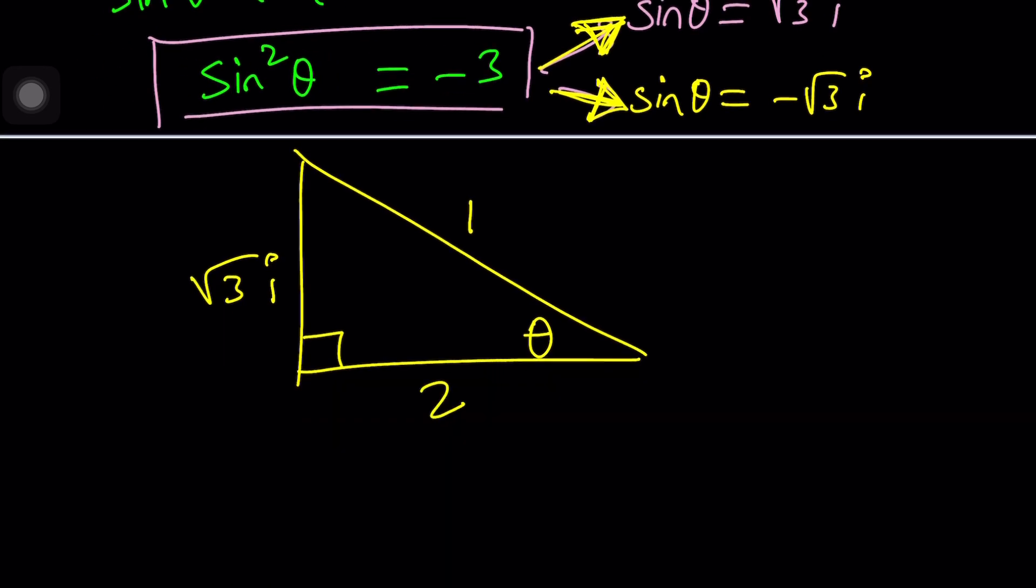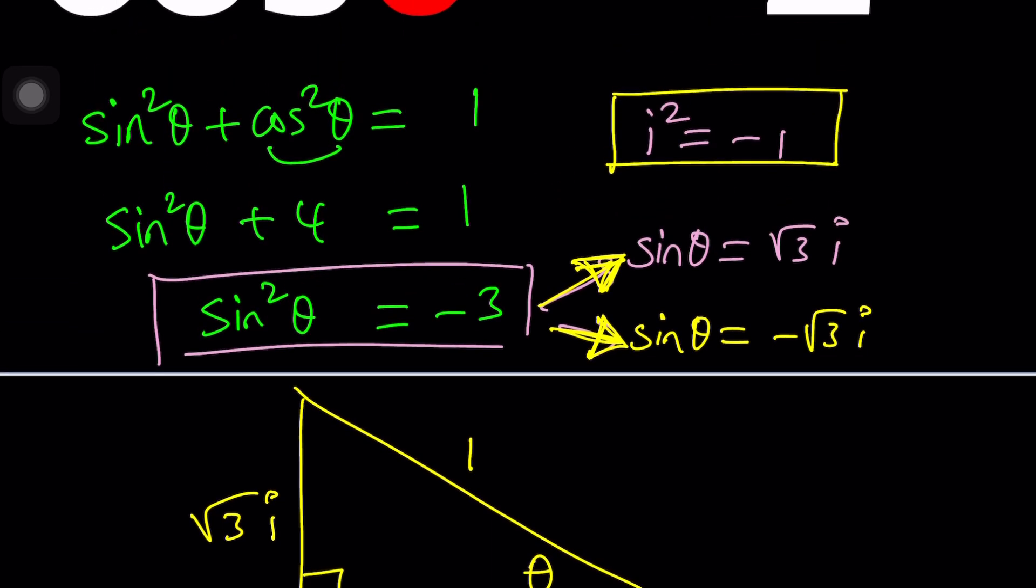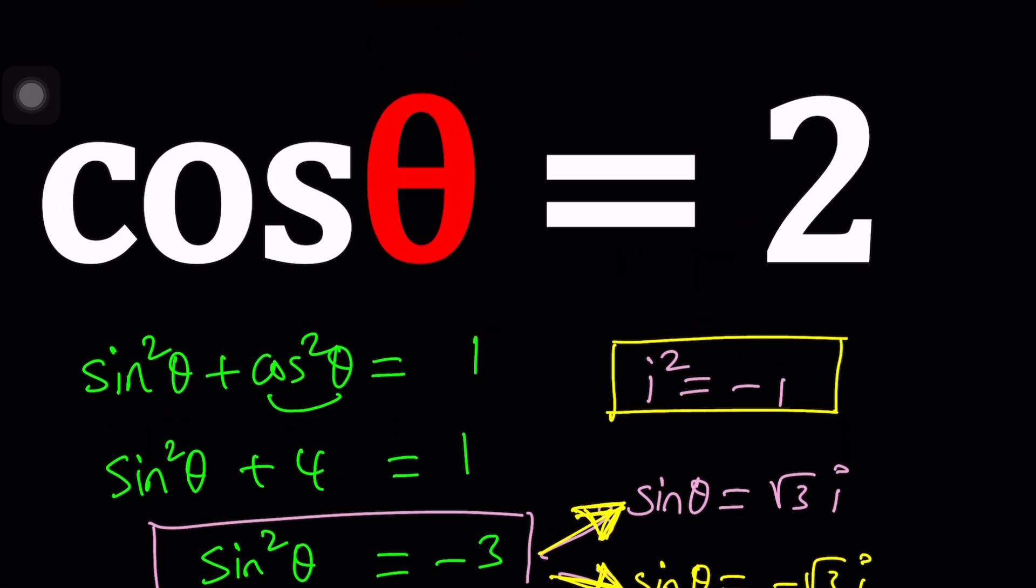It's a world where the hypotenuse is not the longest side, obviously. And can you have a side length of square root of three i? That's a good question. But for some purposes, we could draw this triangle, even though it doesn't exist in the real world. This doesn't really help us solve it, but I just want to show you some of the implications of this equation.